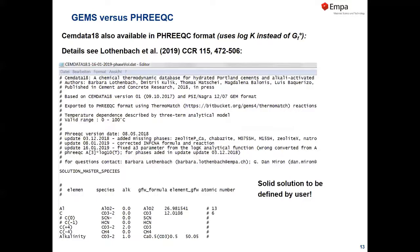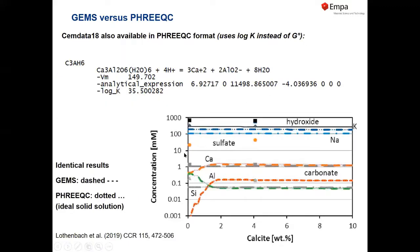We learn GEMS here, but there's also a 3xC version for those who prefer it — we get essentially the same results, except when looking at the 10th decimal place. The only difference is that in 3xC you have to define solid solutions yourself in the input, as they are not part of the database. This comparison shows dashed lines from GEMS and dotted from 3xC — there's no significant difference between results.